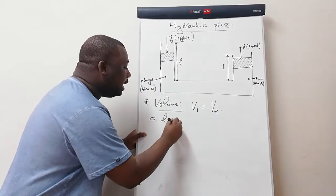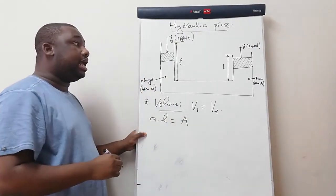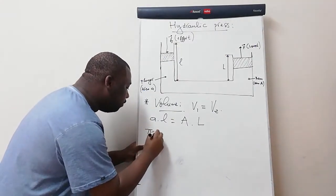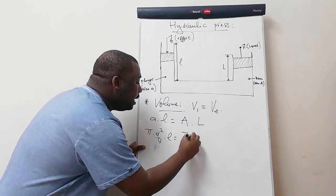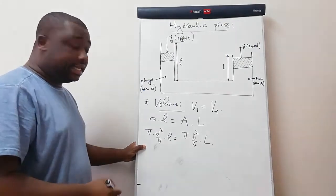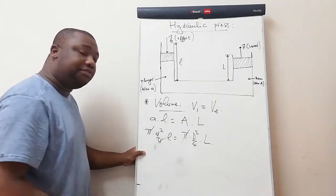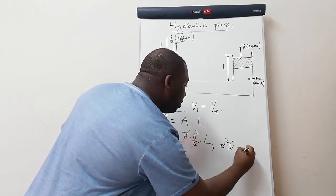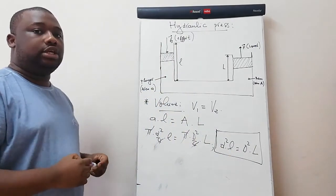So: small a × small l = big A × big L. Since area equals π d² over 4 for both sides, substituting and simplifying — the π's and 4's cancel — gives the important relationship: d² × l = D² × L.